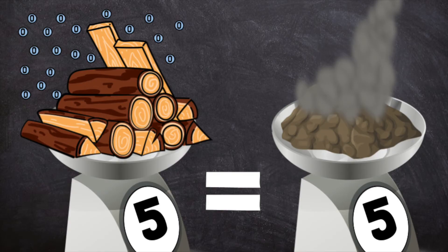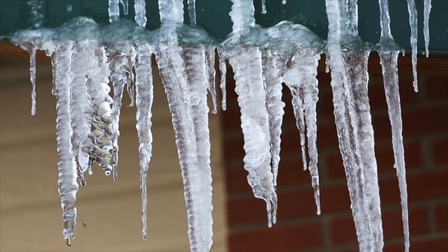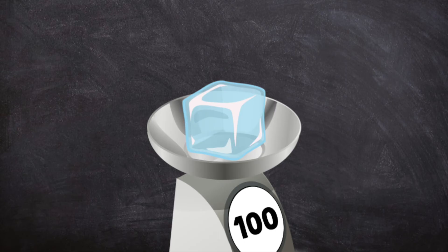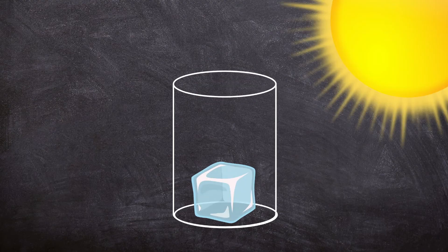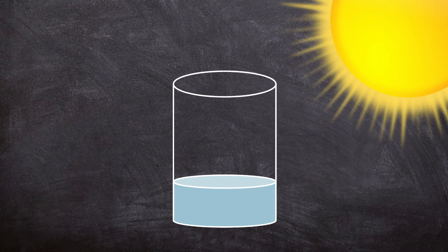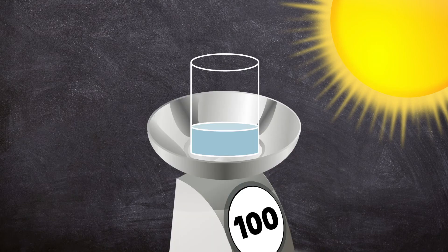We can also see the law of conservation of mass during physical changes, like when water changes states. Say you have an ice cube with a mass of 100 grams. You place the ice cube in a glass and set it in the sun to melt. As the ice melts, it changes into liquid water, and the liquid water in the glass still has a mass of 100 grams.